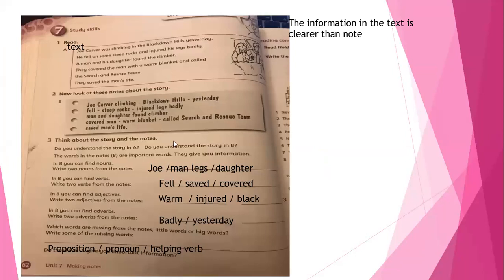Look here, here we have a text. I will read the text. Joe Carver was climbing in the Black Downhounds yesterday. He fell on some steps, broke and injured his leg badly. A man and his daughter found the climber. They covered the man with a warm blanket and called the search and rescue team. They saved the man's life.